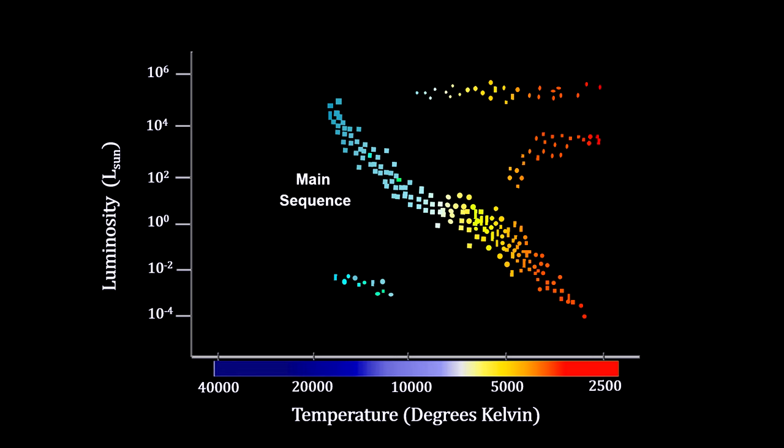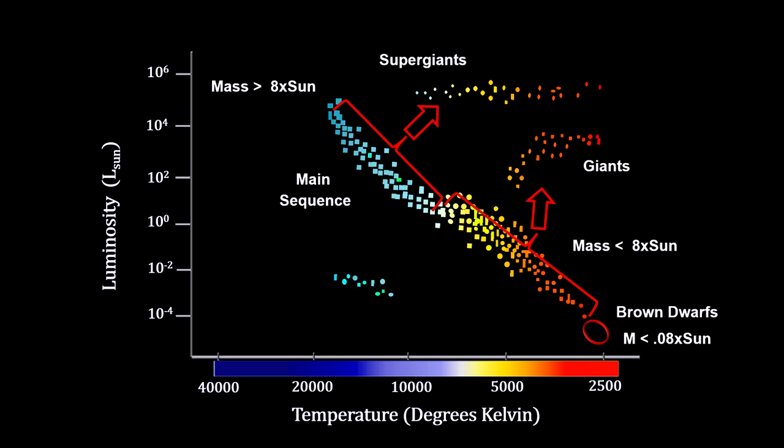On an HR diagram, we put brown dwarfs below the low mass red stars. And because they do not burn hydrogen, they never grow to giant stars and explode. Brown dwarfs only shine in infrared. They are not brown.